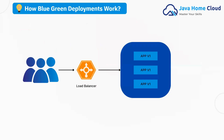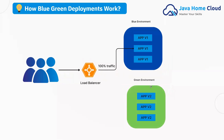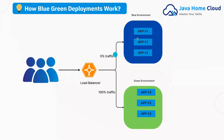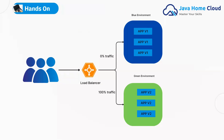Let's understand how blue-green deployment works. The load balancer forwards 100% of traffic to the current version of the application, which is the blue environment. Later, when you want to forward traffic to the latest version — the green environment — you set traffic to the blue environment to zero percent and forward 100% to the green environment. And whenever you want to roll back to the previous version, you can switch back to the blue environment.